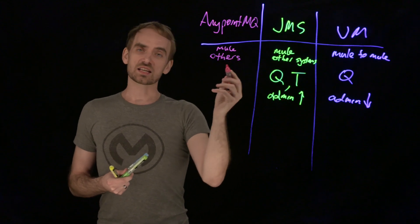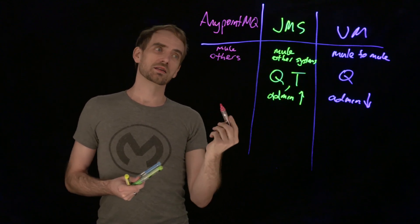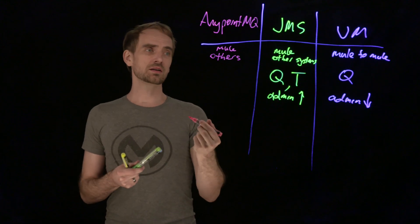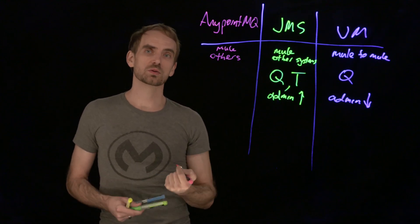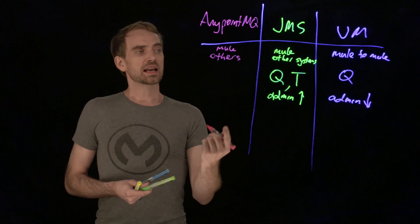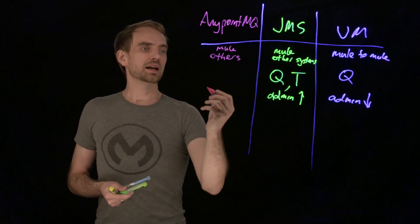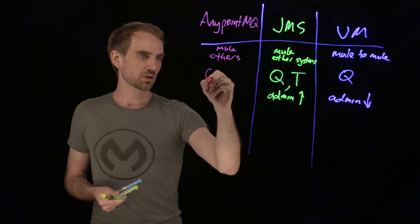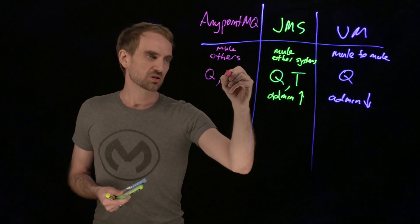This interface is via a REST interface. So, unlike JMS where the clients need to have a driver, you can use HTTPS to talk to AnyPointMQ to both publish and receive the messages. Now, it doesn't have the notion of the topic, but it has an exchange. So, it has the notion of queues. It has the notion of an exchange.